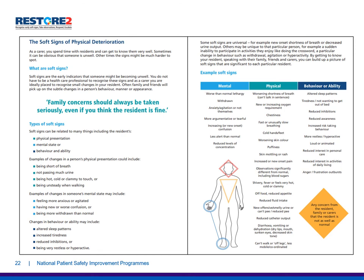Family concern should always be taken seriously even if you think the resident is fine. There are different types of soft signs related to many things including the resident's physical presentation, mental state or behaviour and ability. Examples of changes in a person's physical presentation could include being short of breath, not passing much urine, being hot, cold or clammy to touch, or being unsteady when walking. Examples of changes in someone's mental state may include feeling more anxious or agitated, having new or worse confusion, or being more withdrawn than normal. Changes in behaviour and ability may include altered sleep patterns, increased tiredness, reduced inhibitions, or being very restless or hyperactive.